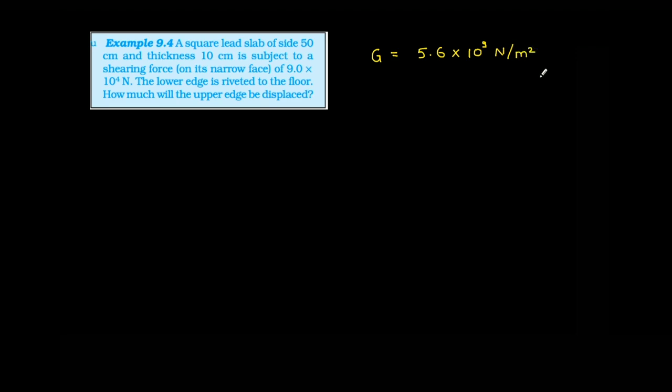I'm getting 16.1 × 10⁻⁴ meters. Wait — you always miss one factor of 10. Is it 16 × 10⁻⁵? Yes, okay. So check — yes, that's correct. All right, this is the shear modulus problem solved.